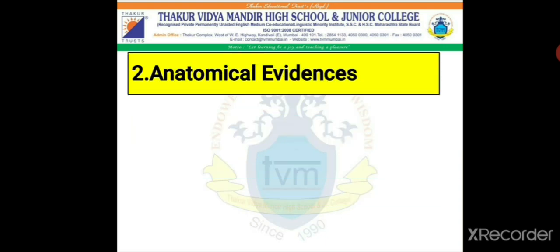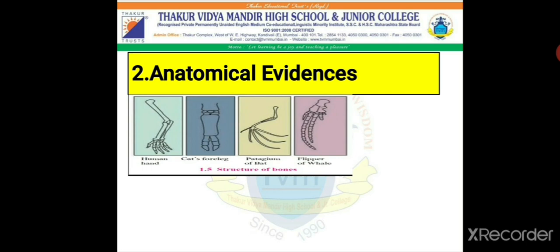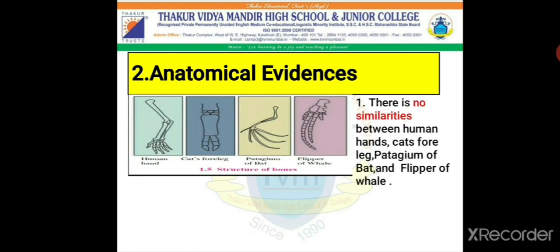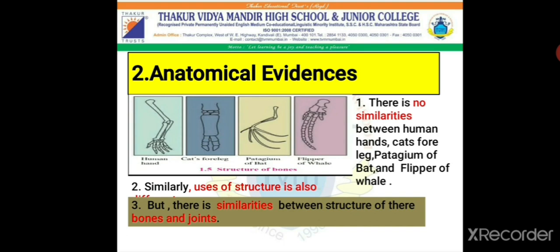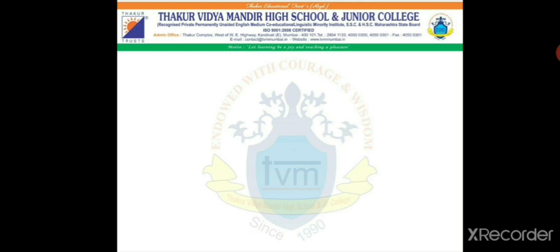The second one is anatomical evidences. Anatomy means the study of the structure of bones. In this picture you will see the bone structure of four different animals: the first is the human hand, the second is the cat's foreleg, the third is the patagium of a bat, and the fourth is the flipper of whales. When you observe these structures, you will notice there are no external similarities between any of them, and the use of each structure is also different. But there are similarities between the structures of their bones and joints, which indicates that they originated from the same species.